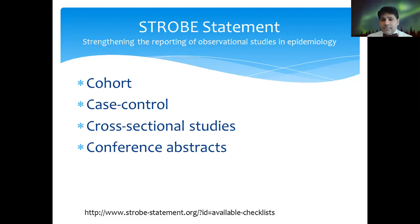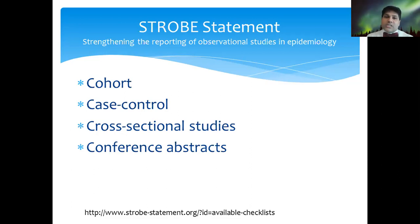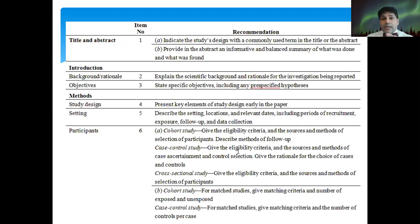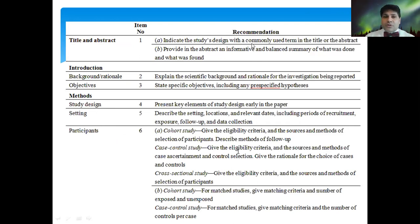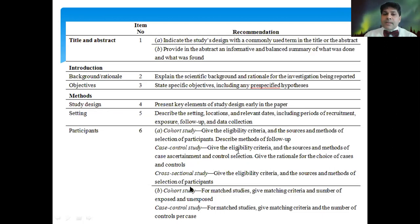The STROBE statement is important. There's a link on this slide — you can go and download it. There are multiple checklists based on what kind of study you're conducting, and there's a tool to find all these checklists as well. Once you go to the website, it has a clear checklist showing what to write in the title, abstract, introduction, methods, and so on. For example, for a cohort study versus a case control study, the checklist specifies what to write down for methods, design, and participants.